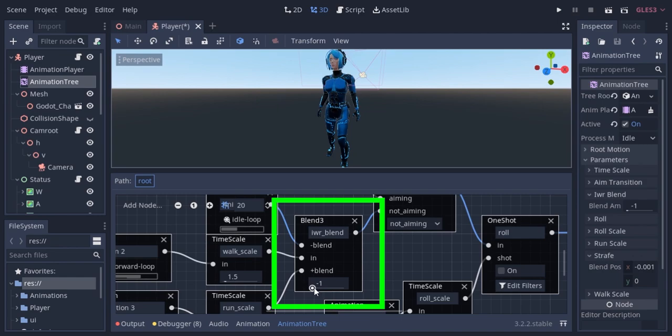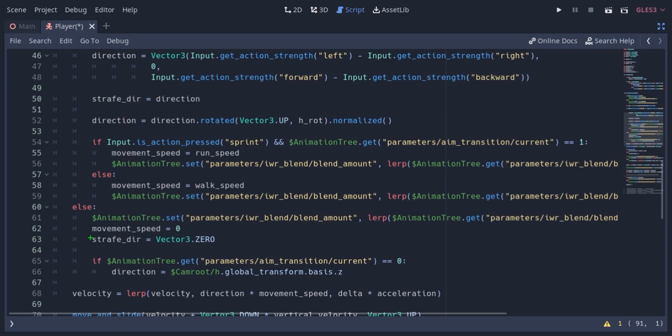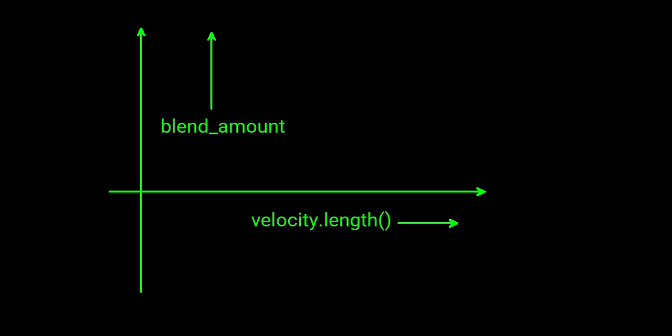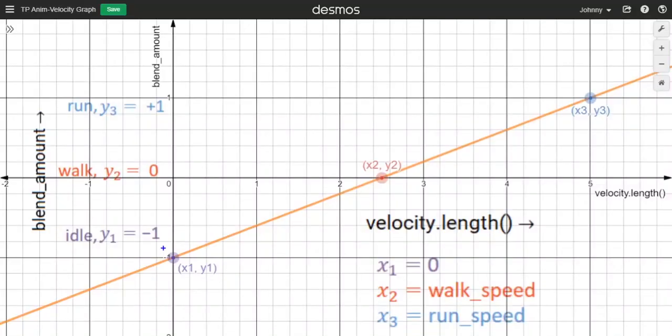I realized I used a range from minus 1 to plus 1 as the blend value for the idle-walk-run blend, and the velocity ranges from 0 to run speed. So if I graph a linear equation taking the velocity as input or x and having the blend value as output or y, I would get a simple line just like this.